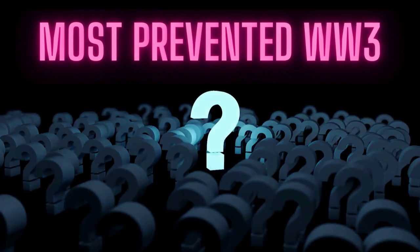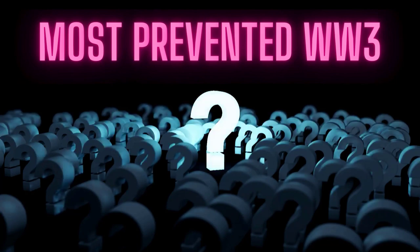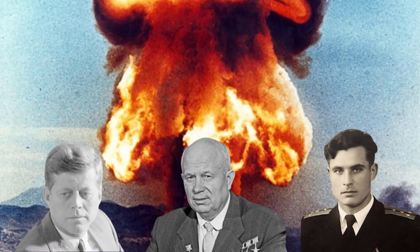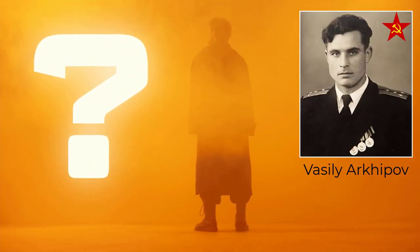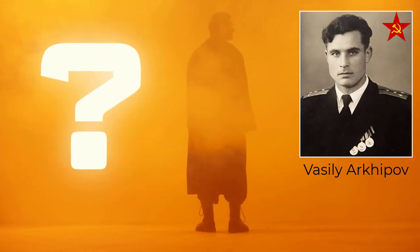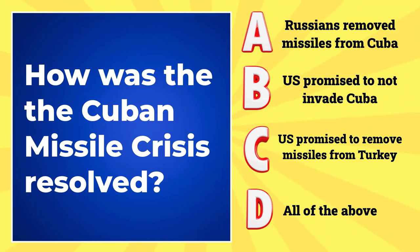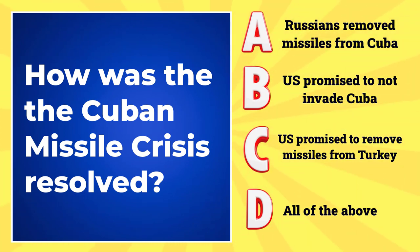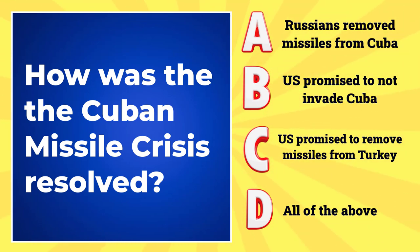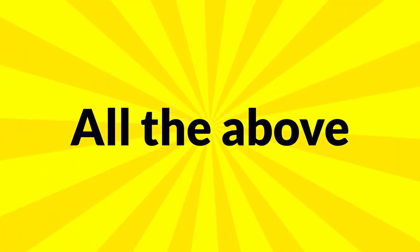Who is most responsible for preventing nuclear war or World War III between the United States and the Soviets? While Kennedy and Khrushchev both played a role, Arkhipov might very well be the real hero. How was the Cuban Missile Crisis resolved? A. The Russians removed missiles from Cuba. B. The United States promised not to invade Cuba. C. The U.S. promised to remove missiles from Turkey. Or D. All of the above? The answer is all of the above.